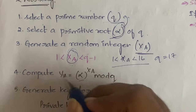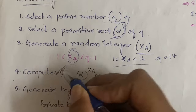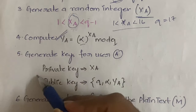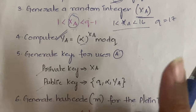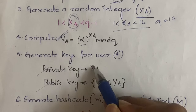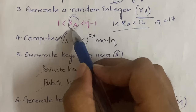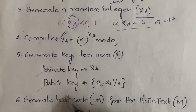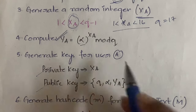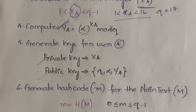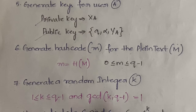Next, you need to generate the keys — private and public keys for user A. The private key for user A is directly xa, the number you assumed. The public key will be the tuple (q, alpha, ya).